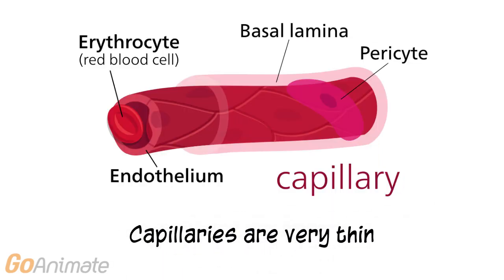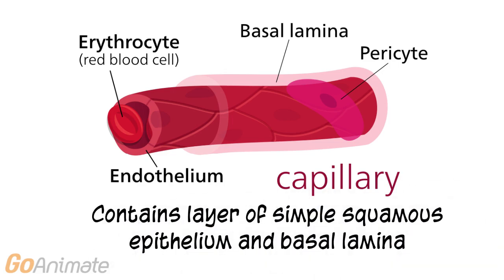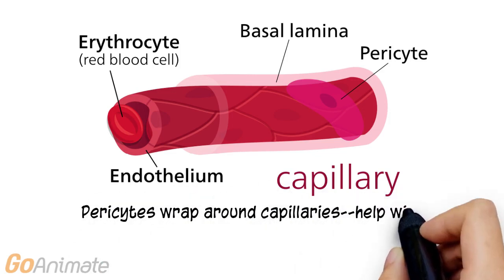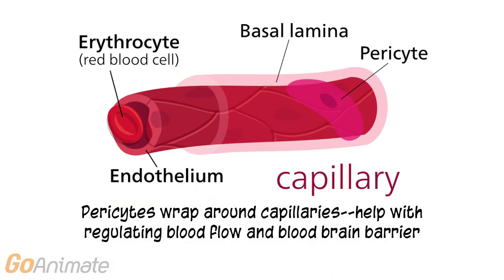Capillaries are the smallest blood vessels and are very thin. Capillaries contain a layer of simple squamous epithelium and basement membrane or basal lamina. Cells called pericytes wrap around capillaries and help with regulating blood flow and establishing the blood-brain barrier.